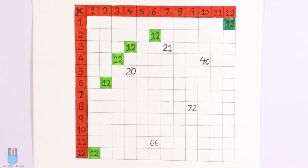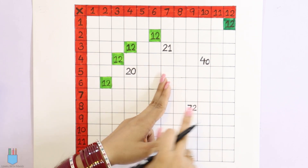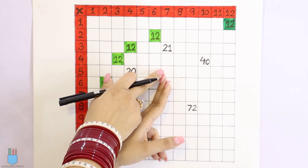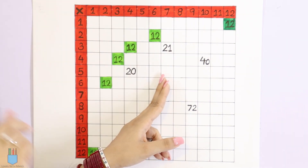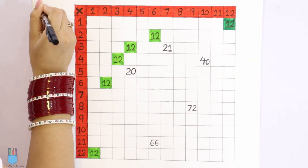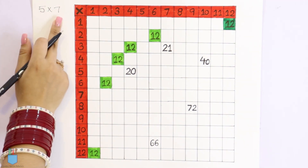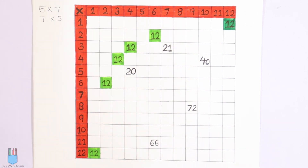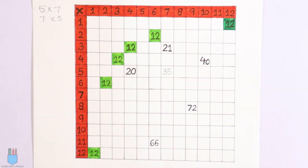Now how do we fill this chart? If we have any random box — let's say we look at this box — what do we do? I'll keep a finger here. If we look up, we see 7, and on the side we see 5. So that means we have to do 5 into 7. Got it? 5 into 7 is 35, and 7 into 5 is also 35. So this box will be 35.